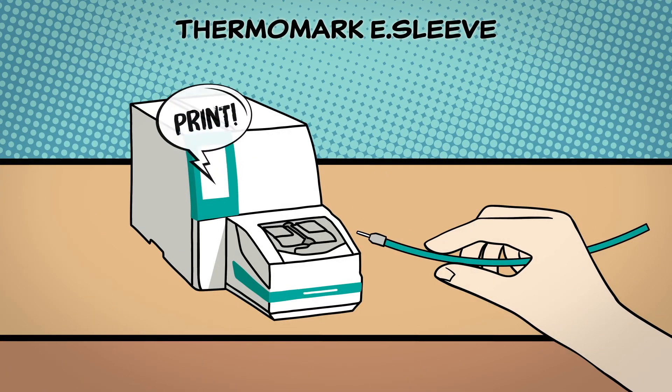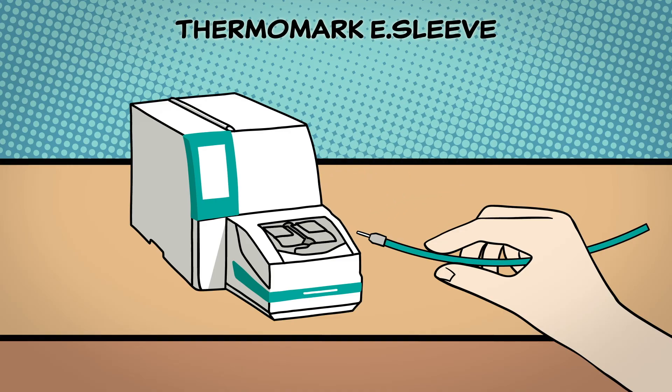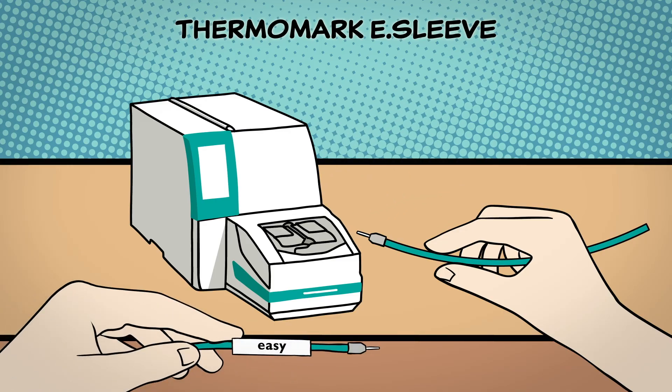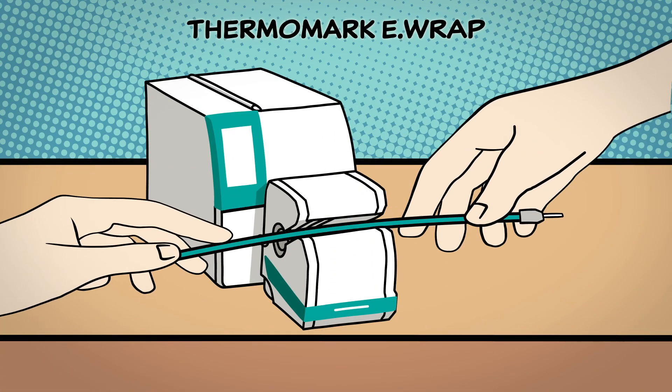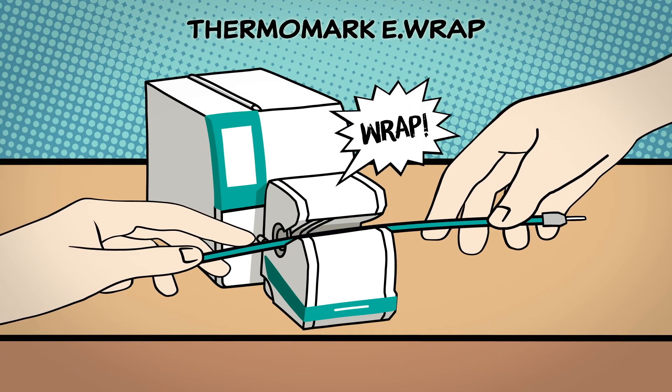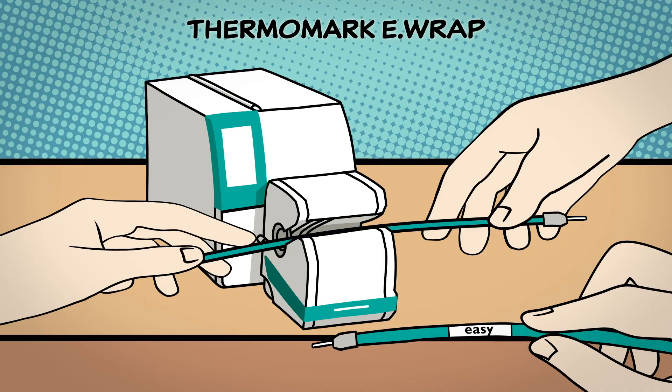The Thermomark E-Sleeve processes shrink sleeves in continuous format and cuts them individually to the desired length. The Thermomark E-Wrap can be used to mark cylindrical objects with wire-wrap labels at a defined position.